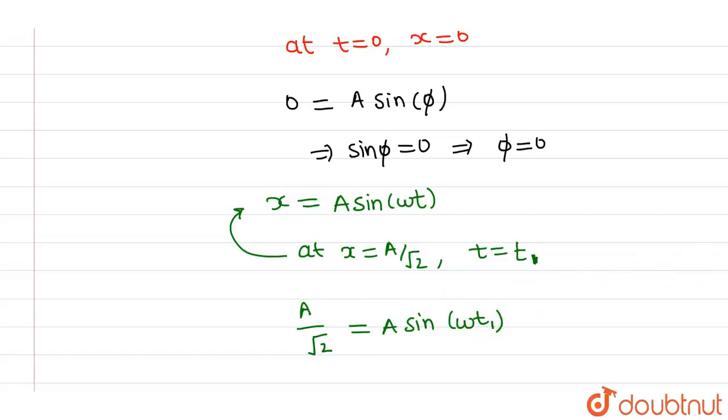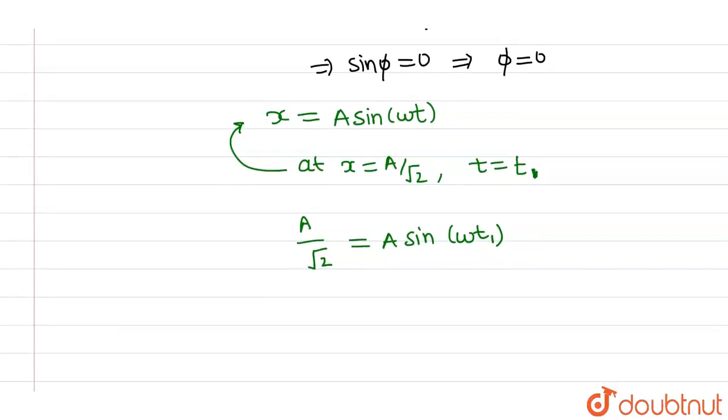From here, I have to find out the value of t1. Now, this A will cancel out, and we know that whenever sin theta equals 1 by root 2, that means theta is 45 degrees, theta is pi by 4. So from here, I can say that omega t1 will be pi by 4.